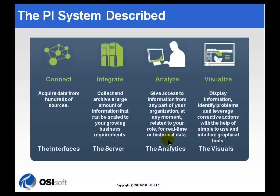That's the quick tour. Now let's go into some more detail. We connect to the data source using our interfaces. These interfaces are smart interfaces, and by that I mean they can auto-configure in some cases. They're basically using some kind of buffering optionally, so that if you have a disconnect between the interfaces and the server, we can buffer data locally and then unspool that data when the connection is restored.